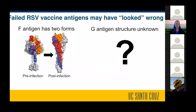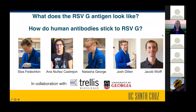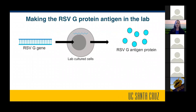In addition to the F antigen, there is the G antigen. When we started this project, the molecular atomic structure of this protein was unknown, and so this is what we sought out to solve. We asked: what does the RSV G antigen look like, and how do human antibodies recognize and stick to the G protein? I am fortunate to have a wonderful group of talented graduate students, staff, and undergrads that have worked in the lab on this project, in collaboration with biotech company Trellis and the University of Georgia. What we're doing is making a recombinant protein vaccine — we obtain the RSV gene and put it inside lab-cultured cells, which act as a little manufacturer and synthesize the G antigen, which we then purify.